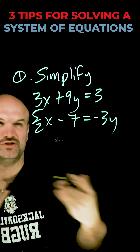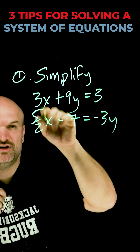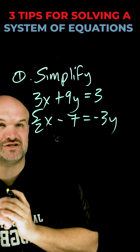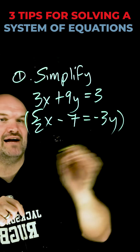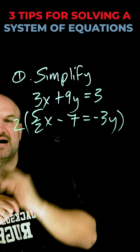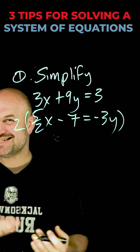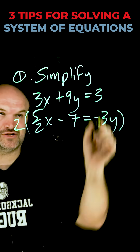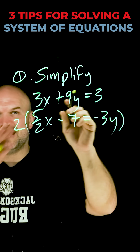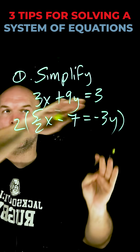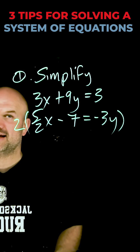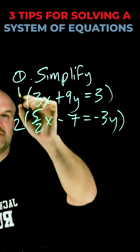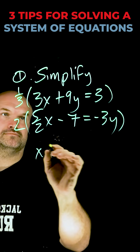Typically when you're using elimination, you're not going to want coefficients that are fractions. So to get rid of your fraction, multiply everything by your common denominator. Also look for scalars of your equations — you can see in this equation that I can actually divide all of my terms by 3, so I'm going to multiply by one-third.